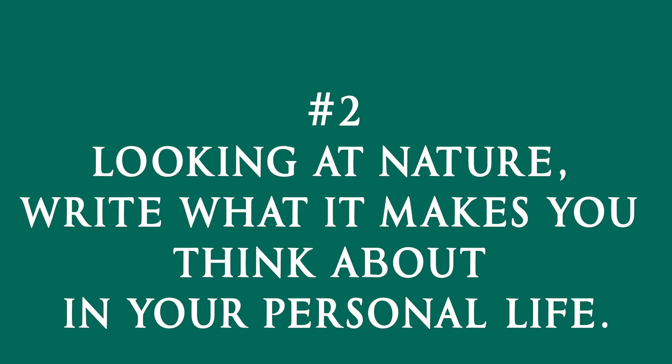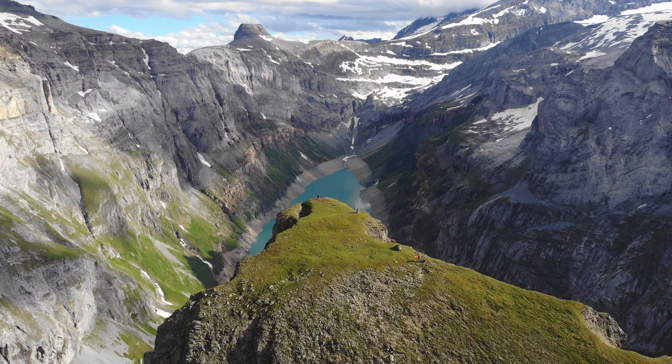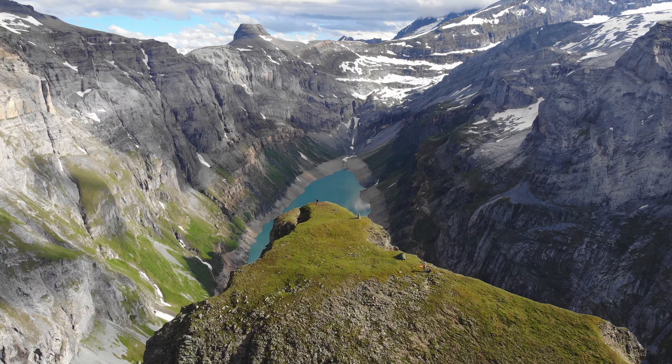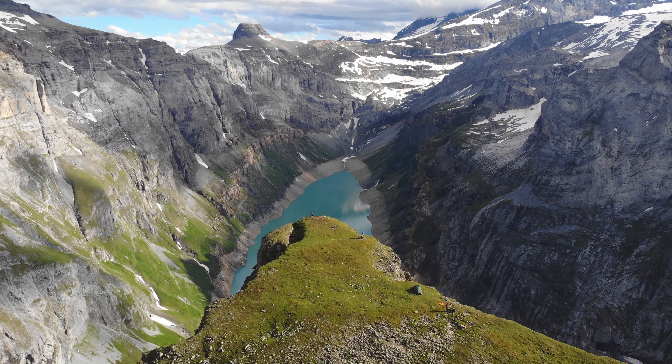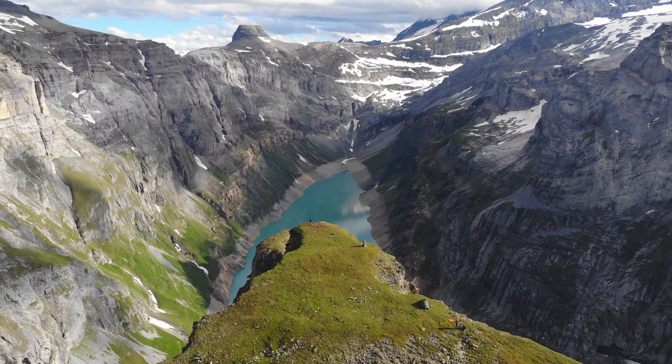Exercise 2: Looking at a plant, wildlife, or landscape, write what it makes you think about. Let's try a connected view exercise. If we're looking at a mountain landscape, write about something in your daily life that this visual inspires us to think about.